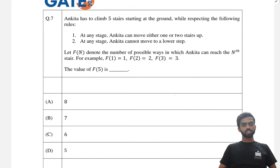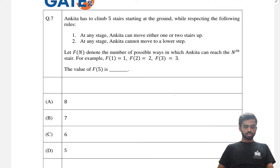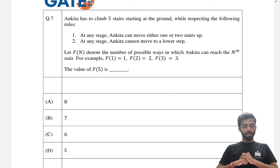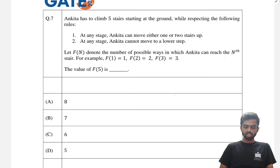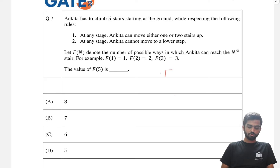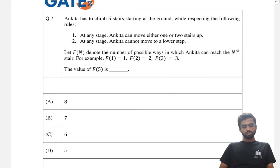Question seven: Ankita has to climb five stairs starting from the ground. At any stage she can move either one step or two steps — she can skip a step but can never go back. F(n) denotes the number of possible ways to reach the nth stair. F(1) = 1, F(2) = 2, F(3) = 3. We need to find F(5). A shorter way is the Fibonacci series, but let's use a manual approach.